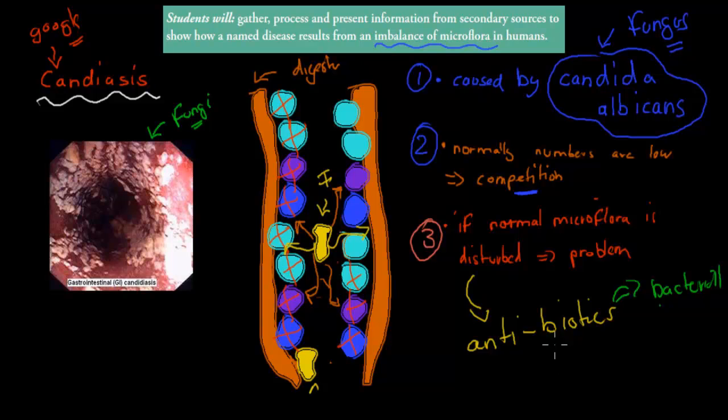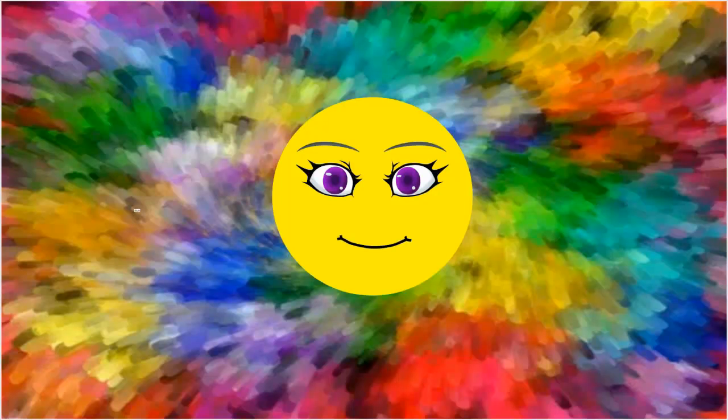So I'll go over the dot point again. Present information from secondary sources to show how a named disease results from an imbalance of microflora in humans. So we've got this Candidiasis, which comes if we have an imbalance. Now, beforehand we had plenty of these healthy bacteria, which kept the fungus away because they had no room. Then we might have used antibiotics, and we're unlucky enough to get our good bacteria to be killed as well, which means the fungus has more room, takes over, and eventually we have this Candidiasis infection, which is caused by the Candida albicans fungus. Hopefully that was useful. Thank you for watching.